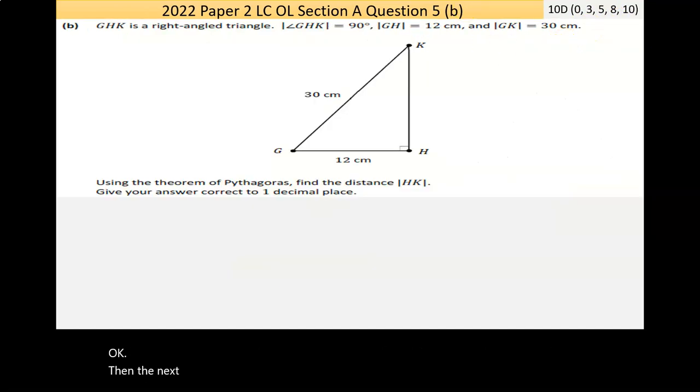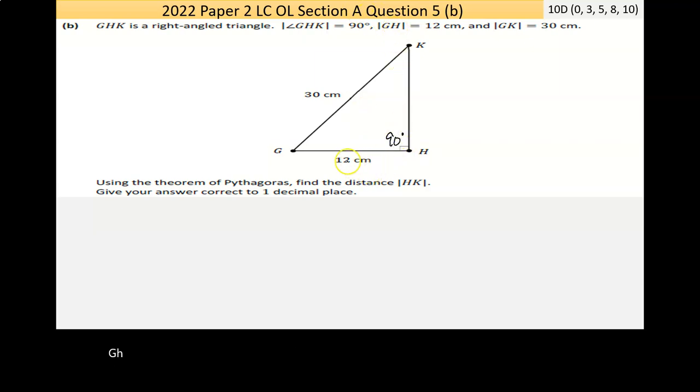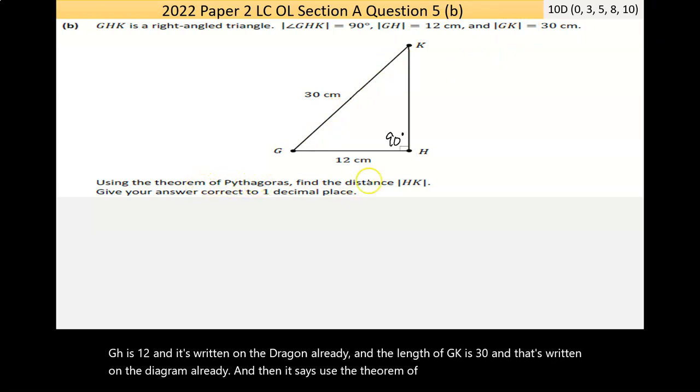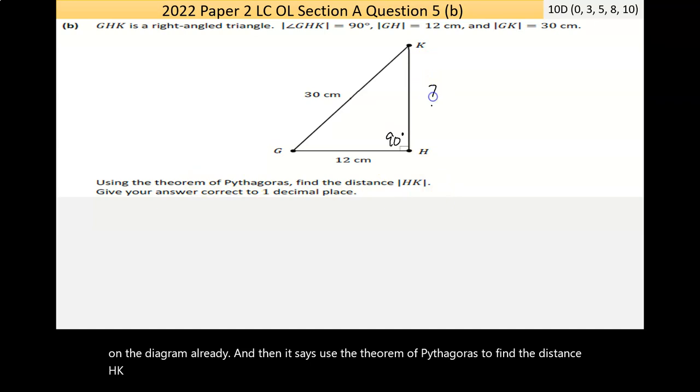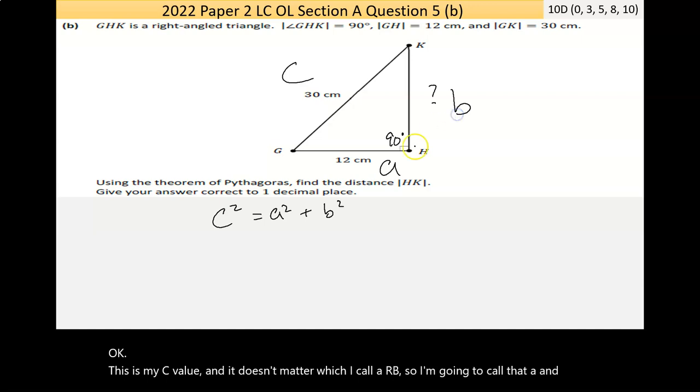Now the next part there is question 5 part B. It says GHK is a right-angled triangle. It says that the angle GHK, so the H there is 90. I'm going to write that on there. GH is 12, and that's written on the diagram already, and the length of GK is 30, and that's written on the diagram already. And then it says use the theorem of Pythagoras to find the distance HK. So this distance here. Now they tell me what to do. So I'm going to write out Pythagoras. That's given in the maths tables. This is my C value, and it doesn't matter which I call A or B. So I'm going to call that A and that B, but I could have swapped them around, it wouldn't matter.